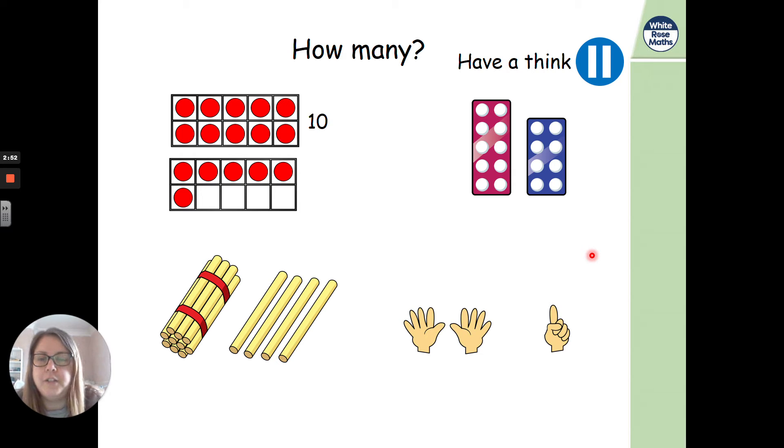So we've got 10, 11, 12, 13, 14, 15, 16, 16. Fantastic. So you can give yourself a tick if you manage to spell 16. And then we've got 18. Then we've got 14. And then we've got 11.